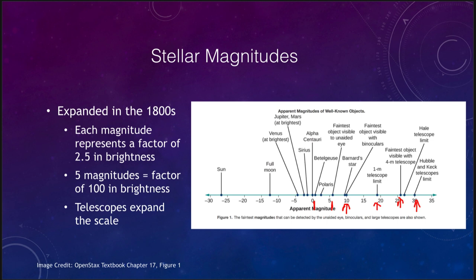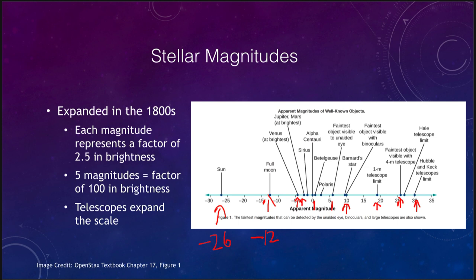Since Hipparchus was only looking at stars, some objects not considered then are actually brighter than first magnitude and have negative magnitudes. Jupiter, Mars, and Venus can all have negative magnitudes. The full moon has a magnitude of about negative 12, and the Sun has a magnitude of about negative 26. Again, very small — including negative — numbers mean very bright objects.